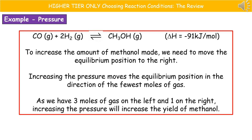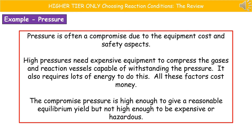If we look at an example of where we choose reaction conditions, we've got a balanced equation at the top. If we want to increase the amount of methanol made, we need to move the equilibrium position to the right because that's where our methanol is. Increasing the pressure moves the equilibrium position in the direction of the fewest moles of gas. In this case we've got three moles of gas on the left and one on the right, so increasing the pressure increases our yield of methanol. However, we don't just keep increasing the pressure endlessly - we have to make a compromise because of the cost of the equipment and the safety aspects. High pressures need expensive equipment to compress the gas and a reaction vessel capable of withstanding these high pressures, plus lots of energy. So we compromise our pressure to make sure it's high enough to give a reasonable equilibrium yield, but not too high as to be too expensive or hazardous.